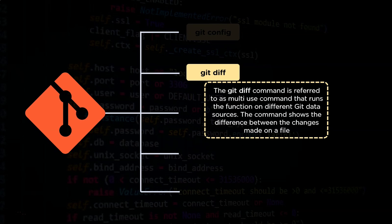The second command in this section is the git diff command. As the name suggests, the git diff command is used to show the differences between the changes made on a file. The command is a multi-use command that runs functions on different git data sources.